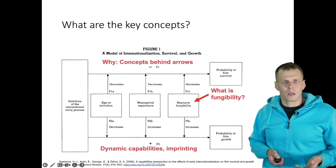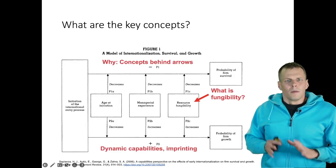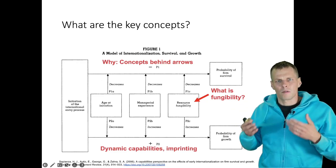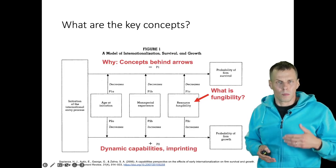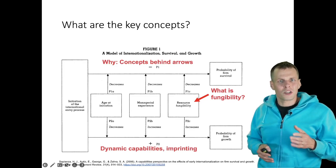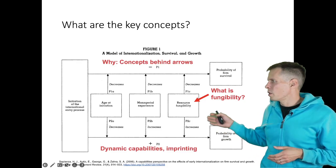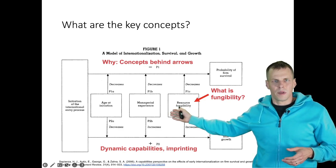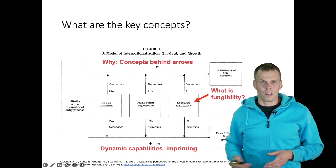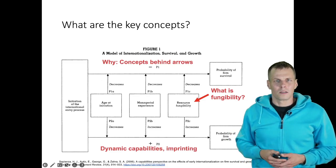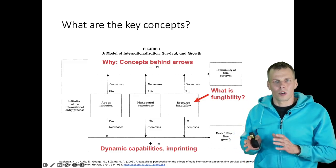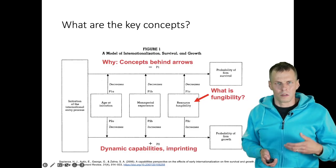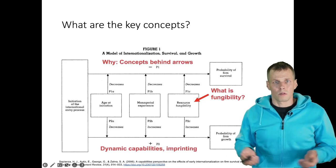The next step is identifying the key concepts and the theory that links those concepts. I have another video about concepts and theories, but ideally if there are boxes-and-arrows diagrams, the boxes are the concepts and the arrows are the causal relationships the article proposes or tests. You need to understand each concept — for example, how do we define fungibility, what does manager experience mean, what is the internationalization process. So you look for a diagram, look for the boxes and their explanations, and identify the propositions explaining the causal relationships between those concepts.